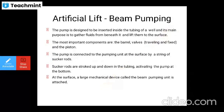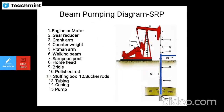At the surface, a large mechanical device called a beam pumping unit is attached. The components are numbered as follows: 1 - engine or motor, 2 - gear reducer, 3 - crank arm, 4 - counterweight, 5 - pitman arm, 6 - walking beam, 7 - samson post, 8 - horse head, 9 - bridle, 10 - polished rod, 11 - stuffing box, 12 - sucker rods which raise up and down, 13 - tube beam, 14 - casing, 15 - pump. This is the beam pumping unit, also known as SRP.